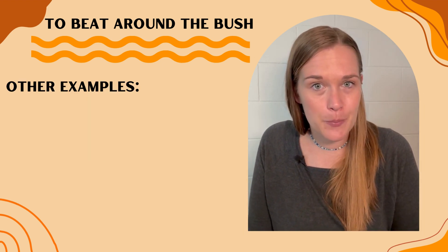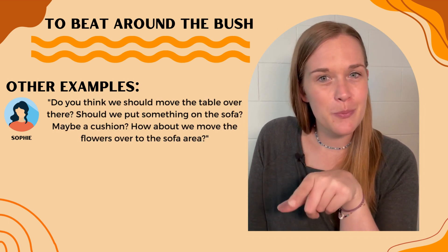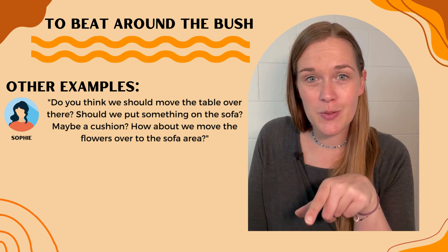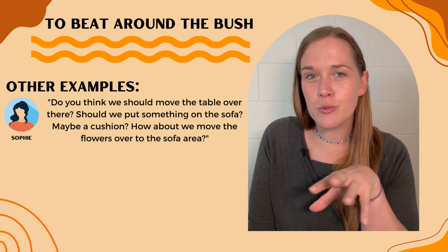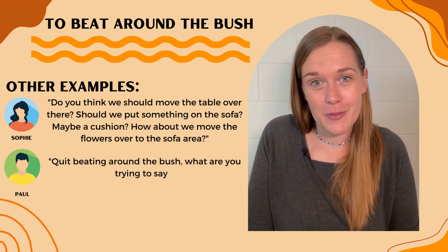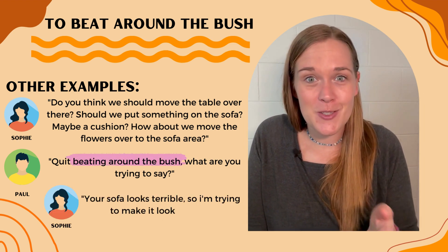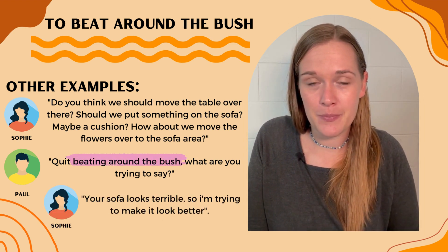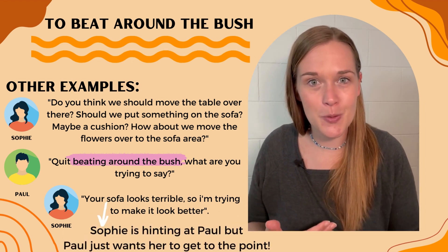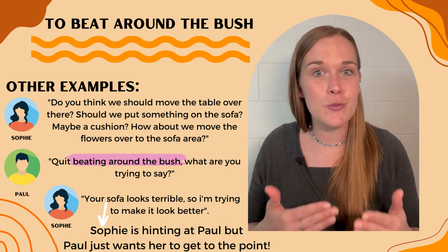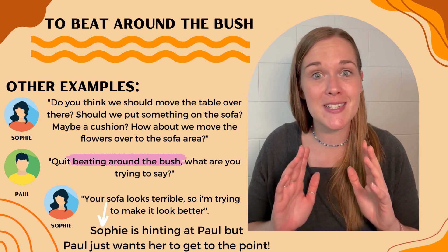Let's look at some other examples. Do you think we should move the table over there? Do you think we should put something on the sofa, maybe a cushion? How about we move the flowers over towards the sofa area? Quit beating around the bush. What are you trying to say? The sofa looks terrible, so I'm trying to make it look a little bit better. This means that Sophie is hinting at different things to Paul, but Paul just wants to know directly what the problem is, so he tells her to just get to the point.